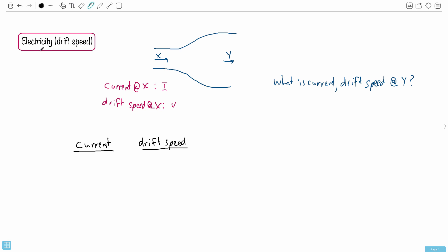This question is about electricity, and more specifically, it's about drift speed. So we're given the fact that we have this wire here, and in this wire you have a cross-sectional area. We could draw some sort of cross-sectional area here, and this one right here is going to be twice that.